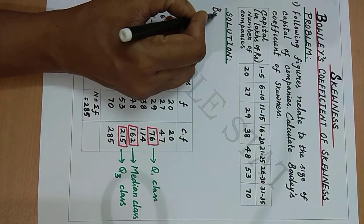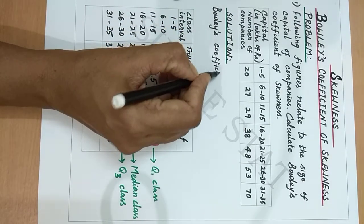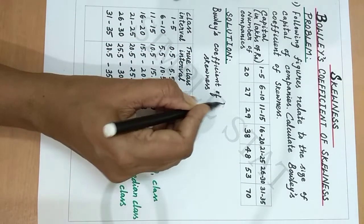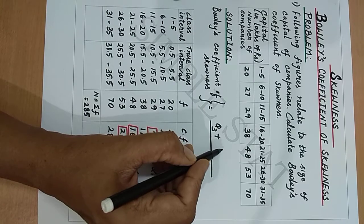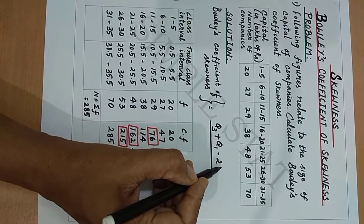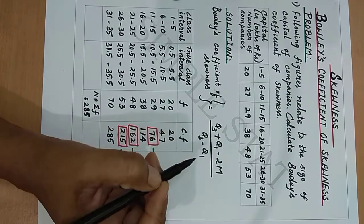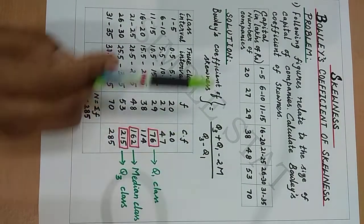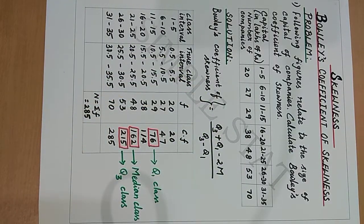Bowley's coefficient of skewness is given by (Q3 + Q1 - 2M) divided by (Q3 - Q1), where Q1 denotes the first quartile, Q3 denotes the third quartile, and M denotes the median. We have already discussed the formula for finding Q1, Q3, and median in the previous videos.